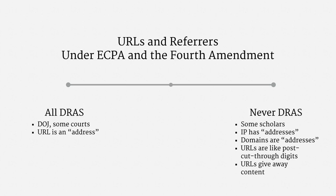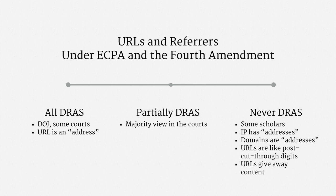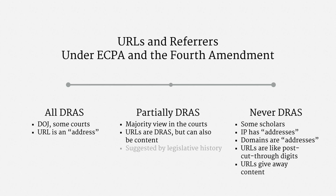Alright, that's the critical view. The third view is in the middle — it says that URLs and referrers are partially DRAS. I think it's fair to say that this is the majority perspective in the courts. The idea is that URLs and referrers are DRAS, but they can also be content, and the content category trumps. There is some discussion in the Pen Register Act's legislative history that supports this view — it seems to potentially be what Congress had in mind, to the extent Congress was actually thinking about the issue.